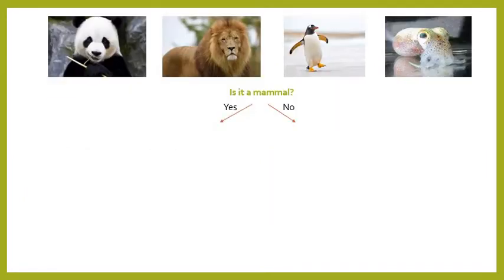So the first question is: is it a mammal? A mammal is a warm-blooded animal that gives birth to live young and produces milk for those young. Looking at our four animals — pandas, lions, penguins, and squid — hopefully we know that the mammals are the panda and the lion, and the animals that are not mammals are the penguin and the squid.